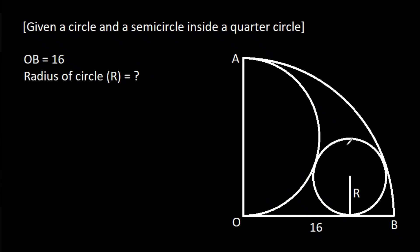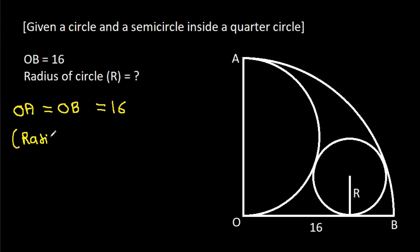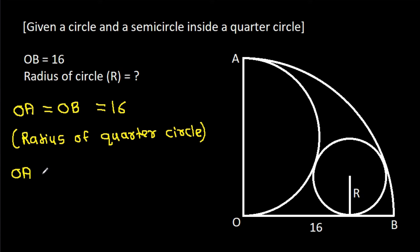In this video, we have been given a circle and a semicircle inside a quarter circle, and OB is 16. We have to find the radius of the circle. OA will be equal to OB, that will be 16. It is the radius of the quarter circle, and OA is also the diameter of the semicircle.